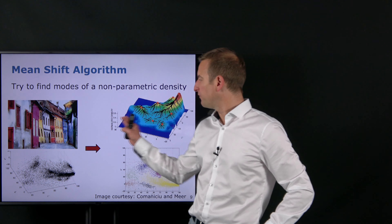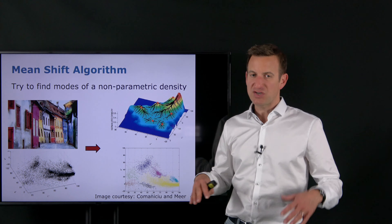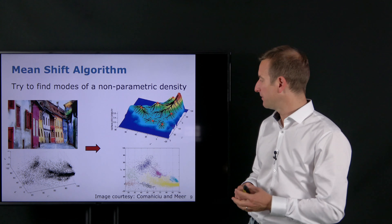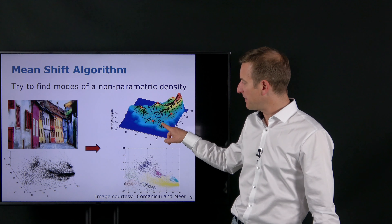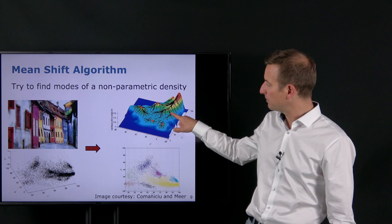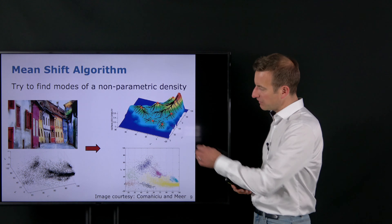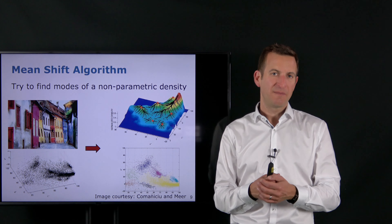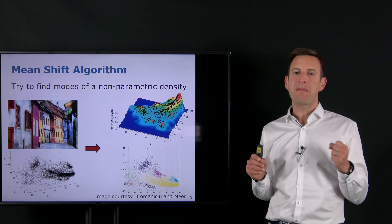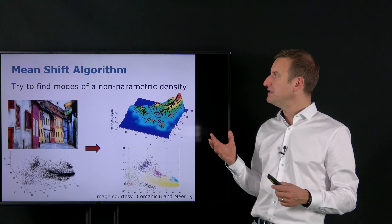The mean shift algorithm performs density estimation and then asks: from which starting point, if I always walk uphill, which mountain peak will I reach? If I start somewhere in one region, I end up at one mountain peak; if I start in another region, I end up at a different peak. All data points on this surface that walk through the same mountain peak are grouped together — they form one cluster. That's the core idea of the mean shift algorithm: always walking uphill by estimating local density and moving in the direction of increasing density until reaching a mode.